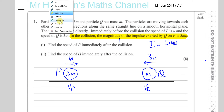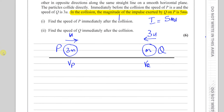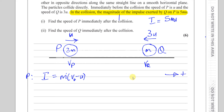We know that the impulse is equal to the change of momentum: mv minus mu, where v and u are the final and initial velocities. So the impulse is the change in momentum — the difference in momentum before and after the collision. We're looking at particle P, and I'm going to take this direction — the direction P is moving — as positive.